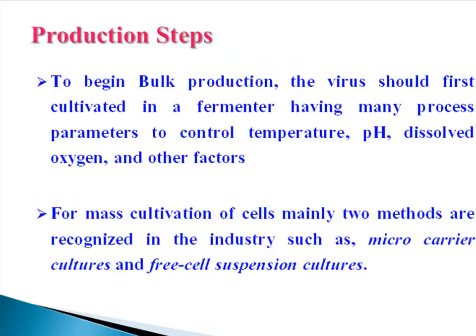Which are the steps we need to follow to produce this vaccine? To begin bulk production, the virus should first be cultivated in a fermenter having many process parameters to control temperature, pH, dissolved oxygen, and other factors. For mass cultivation of cells, mainly two methods are recognized in the industry: micro carrier cultures and free cell suspension cultures.